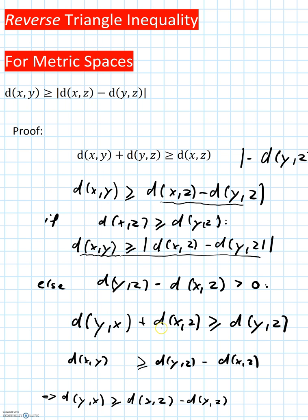And if we subtract d(x,z) from both sides, we get d(x,y) is greater than or equal to d(y,z) minus d(x,z). And this concludes our second case.